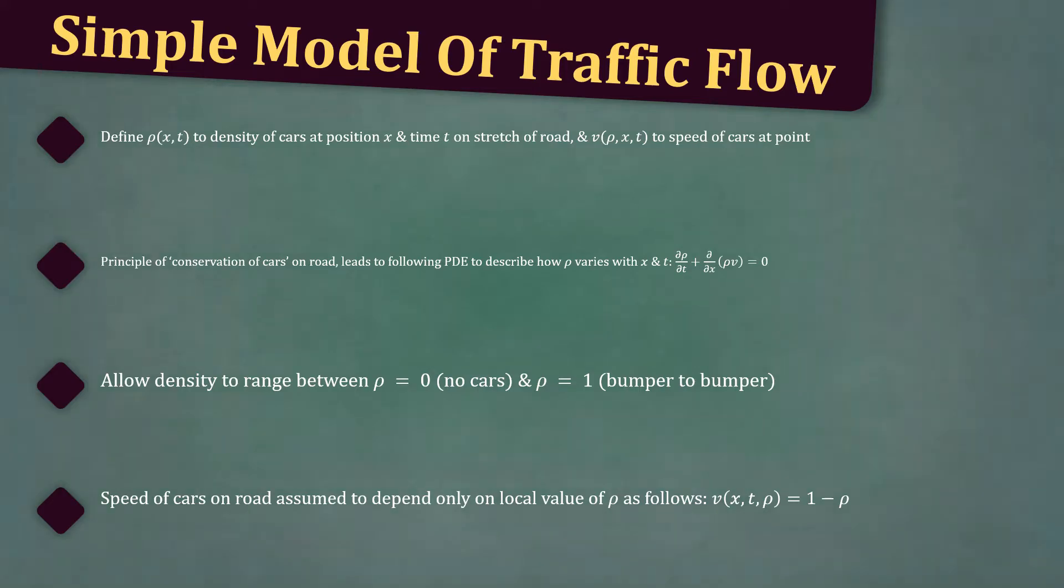v(x,t,ρ) = 1 - ρ. This gives a maximum speed v equals one when the road is clear, and a minimum speed of v equals zero when it is completely congested, with a linear variation in between.